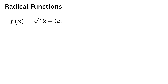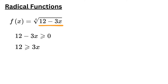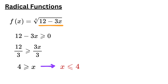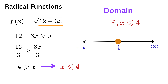For the next function to be defined, 12 minus 3x must be greater than or equal to zero. First, take minus 3x to the right side to make it plus 3x, so 12 is greater than or equal to 3x. Next, divide both sides of the inequality by 3. We get 4 is greater than or equal to x, which means x is less than or equal to 4. Therefore, the domain is all real numbers less than or equal to 4. On a number line, mark a closed circle at 4, shade the line to the left, and write the domain in interval notation as negative infinity to 4].